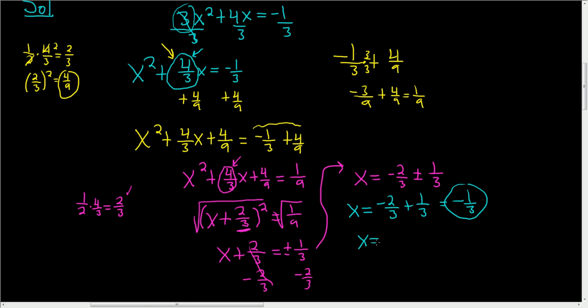And then let's do the minus. So it's minus 2 thirds, and then minus 1 third. Negative 2 minus 1 is 3. So we get minus 3 thirds, which is minus 1. And that's it.